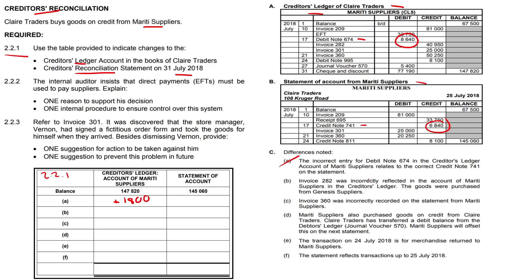Item (b): invoice 282 was incorrectly reflected in the account of Mariti Suppliers in the creditors ledger. The goods were actually purchased from Genesis Suppliers. Invoice 282 is 40,950, so because it was incorrectly reflected in Mariti's account, we subtract that 40,950 from our creditors ledger.